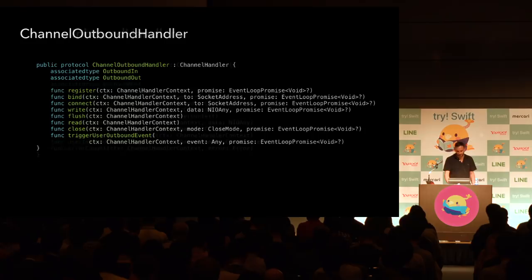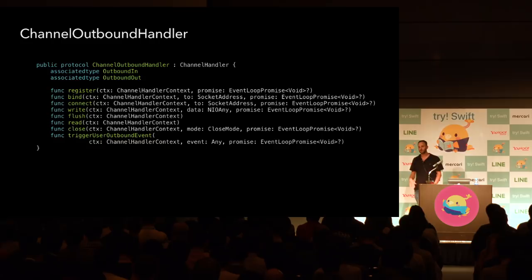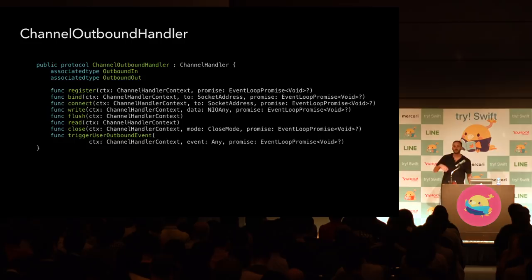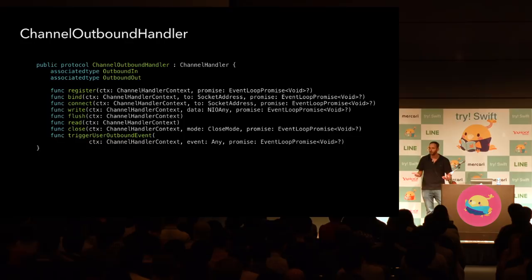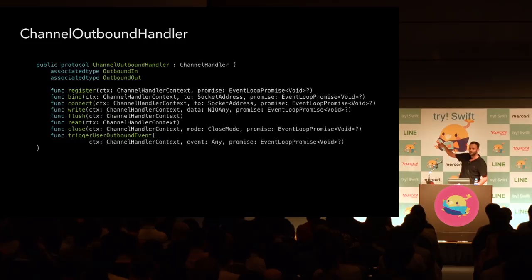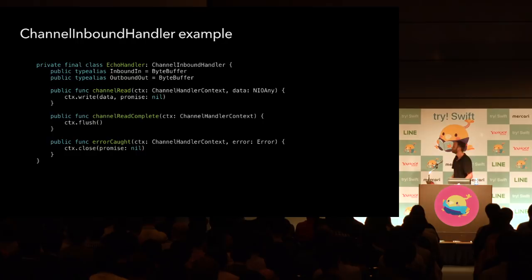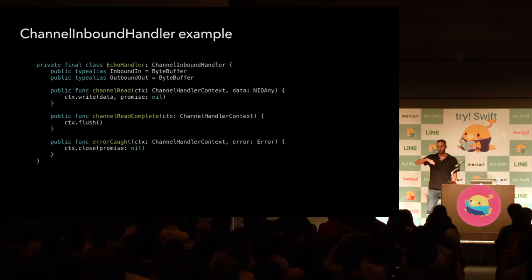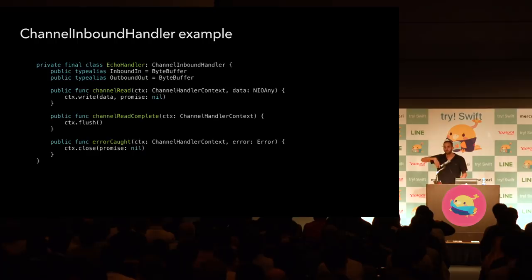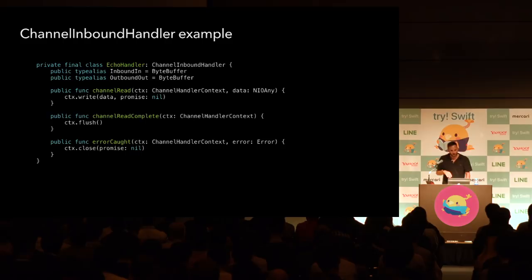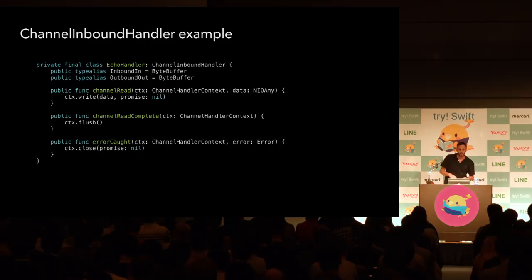The ChannelOutboundHandler works the same way but in the outbound direction — everything you trigger as a user. For example, write writes data to the channel — we buffer it and it's only actually written to the socket when you call flush, saving syscalls and making it faster. An important detail: a promise is passed in, acting as a placeholder notified once the operation completes, because everything is non-blocking. In the echo handler example: channelRead is called, we call write to bounce data back to the remote peer, pass nil as the promise since we don't care about the result, then channelReadComplete triggers flush to send all buffered data in one syscall, and errorCaught closes the connection.